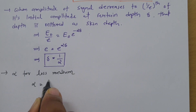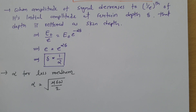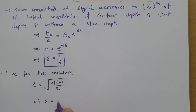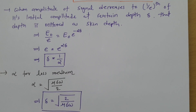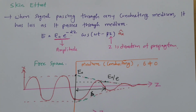The value of alpha for a lossy medium is the square root of (mu sigma omega / 2). This was derived in a previous session. Based on this, we can say skin depth delta equals the square root of (2 / mu sigma omega). This formula gives you an idea of what skin depth is and how to calculate it. Skin depth depends on mu, sigma, and omega, where sigma is conductivity, mu is mu_0 times mu_r, and omega is the frequency of the EM wave.